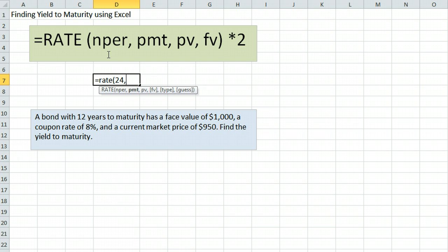The next piece of information is the payment, which refers to the coupon payment. This is a face value of $1,000 and a coupon rate of 8%. 8% of $1,000 is $80 annual. The semi-annual coupon payment is therefore $40.